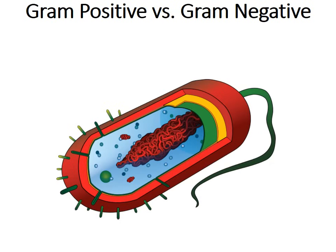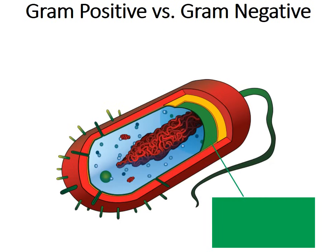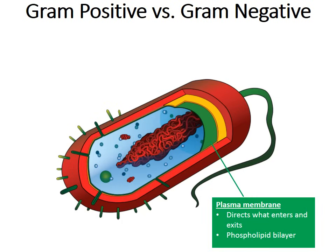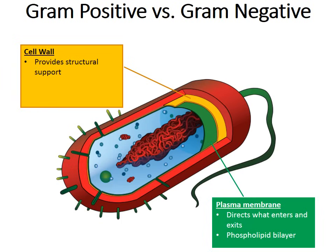Here's a diagram of a typical bacteria cell. I want to note the three layers that most bacteria have. The innermost layer colored green is the plasma membrane, which directs what enters and exits the cell. It's a phospholipid bilayer with some proteins scattered in between. The middle layer in gold is the cell wall, which provides structural support to the cell. It's made up of a polysaccharide called peptidoglycan.